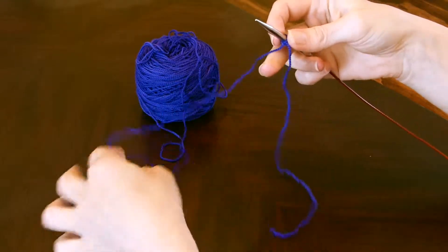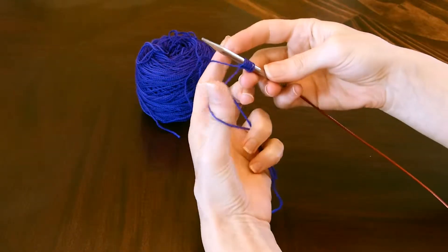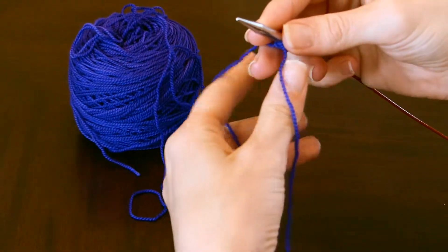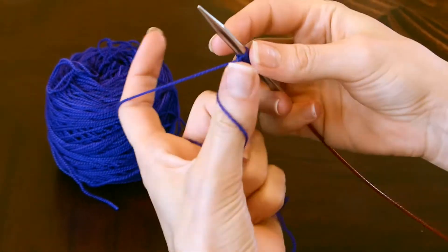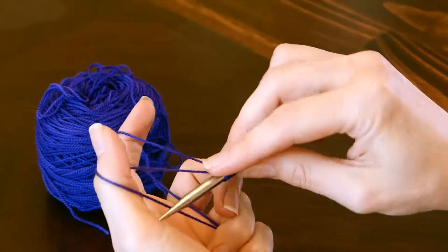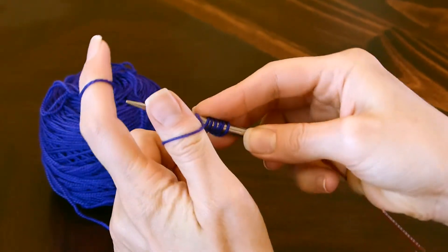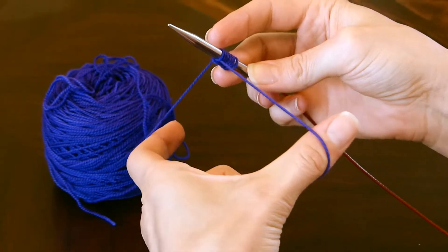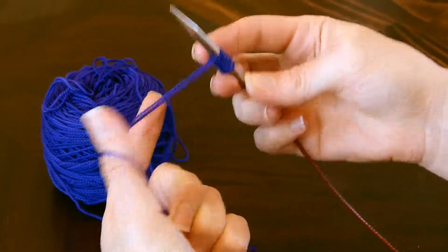I'm going to show it again in slow motion. Short end wrapped around thumb, long tail on the finger. Go under, grab the long tail, release, and tighten it up.